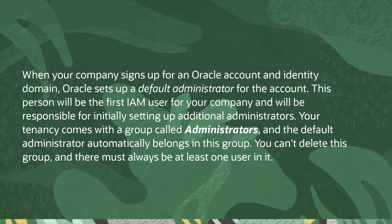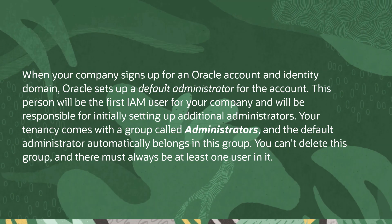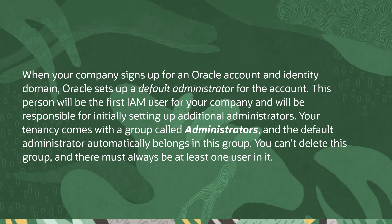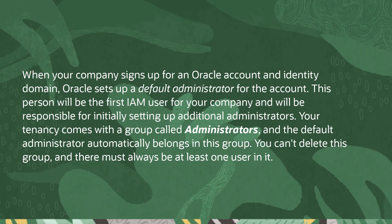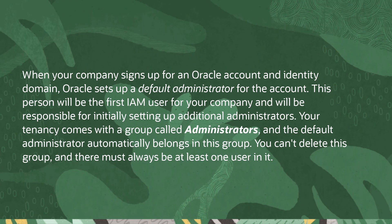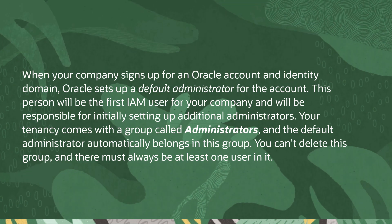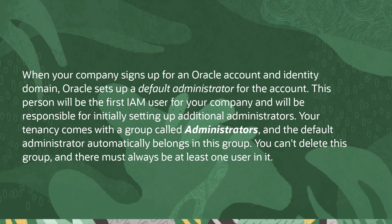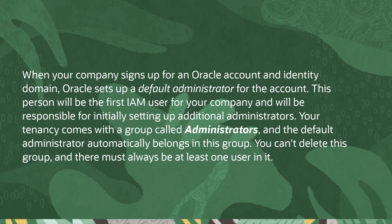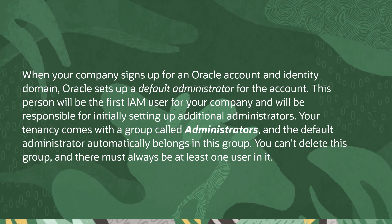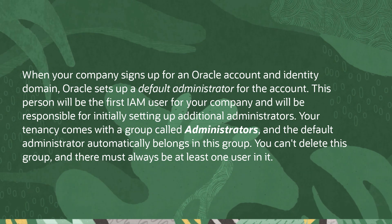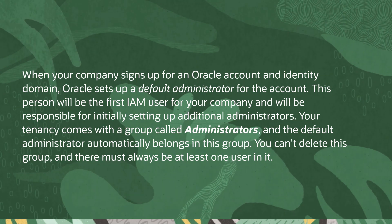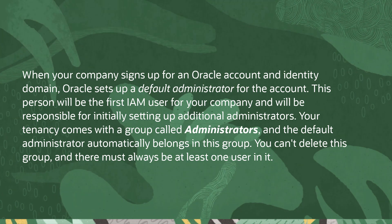When your company signs up for an Oracle account and identity domain, Oracle sets up a default administrator for the account. This person will be the first IAM user for your company and will be responsible for initially setting up additional administrators. Your tenancy comes with a group called Administrators, and the default administrator automatically belongs in this group. You can't delete this group, and there must always be at least one user in it.